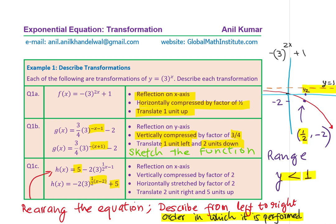Let's write down the transformations: first, a reflection on the x-axis because of the minus; then vertically stretched — not compressed but stretched — by a factor of 2, because it is greater than 1; horizontally stretched by a factor of 2; and then translate 2 units right and 5 units up. That is how we complete the transformation of this particular function.